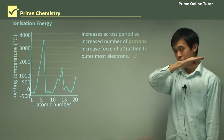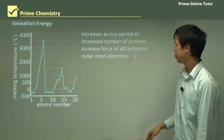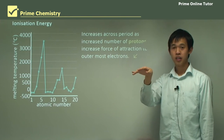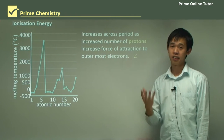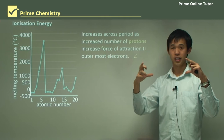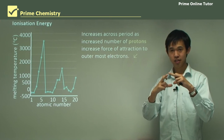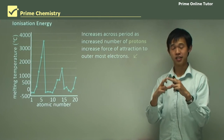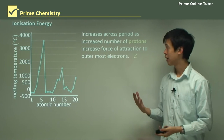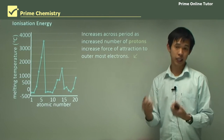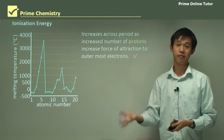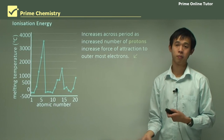As we go across the period, the ionization energy increases, and that's because the distance from the nucleus decreases — the atomic radius essentially decreases because you're adding lots of protons — so the attractive force is bigger and you need more energy to knock that electron out of the atom.